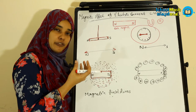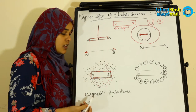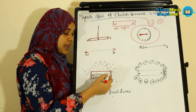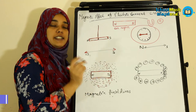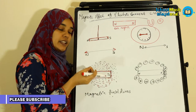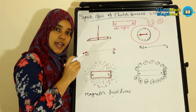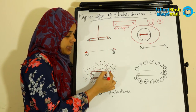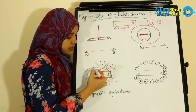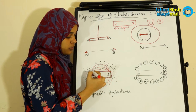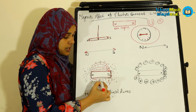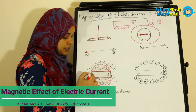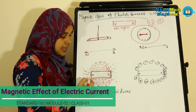We also have a force experienced under the magnet — that force or influence around the magnet gives us a magnetic force. In our experiment, we have the pattern of iron filings, and we have to draw these lines. We call these lines magnetic field lines.